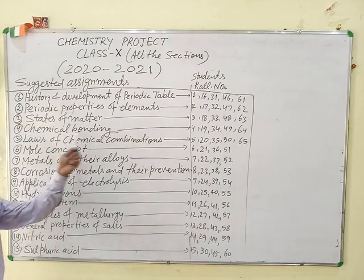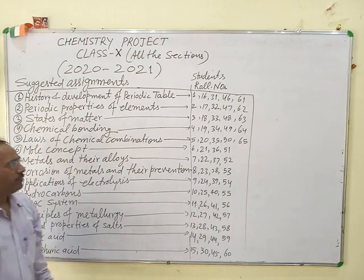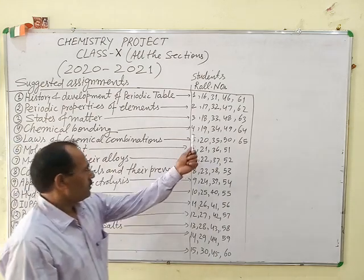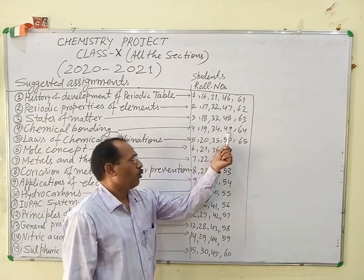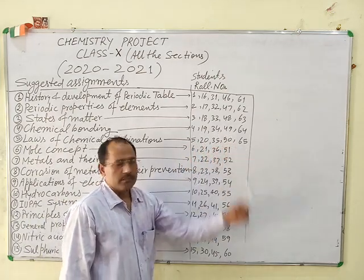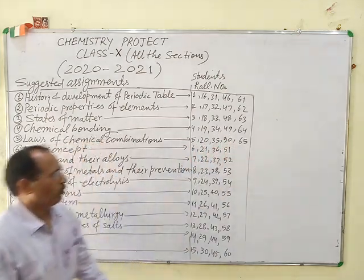Chemical bonding is for roll numbers 4, 19, 34, 39 and 64.